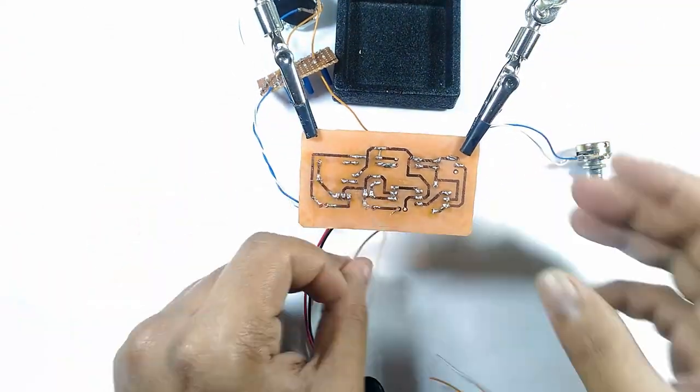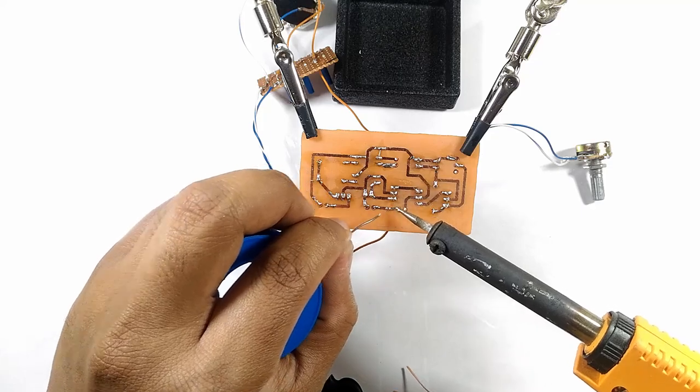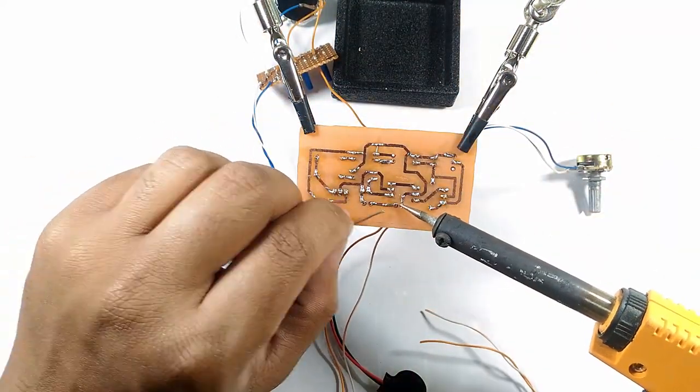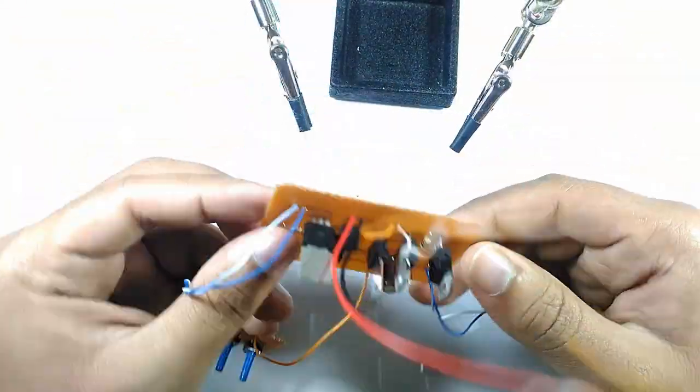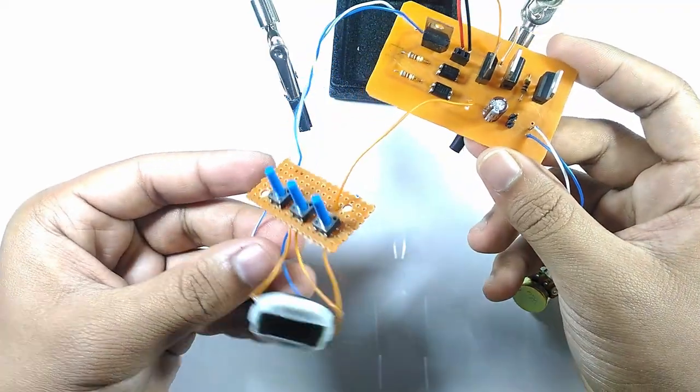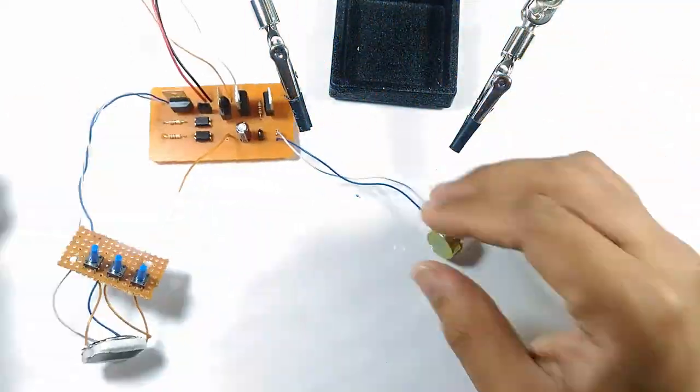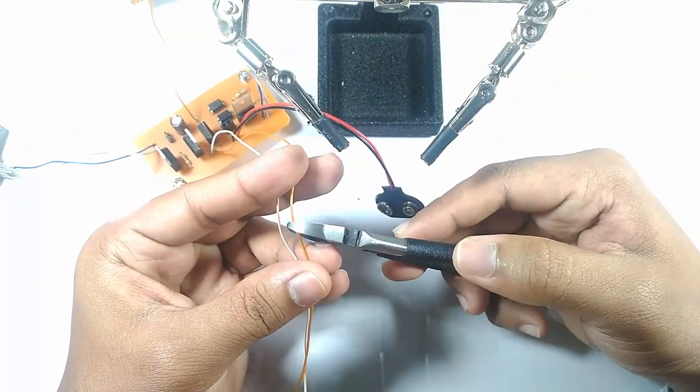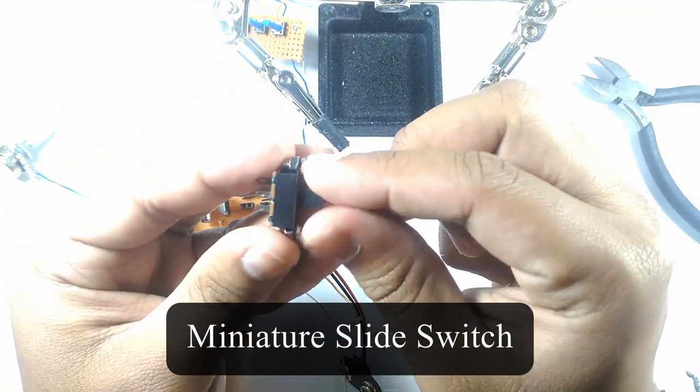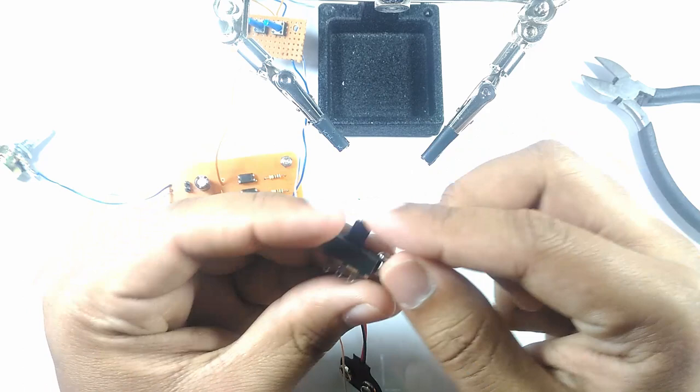Thereafter, I soldered in some wires which would connect to a micro switch. I added a mini slide switch in between the PCB and the micro switch so that the feeder can be turned off when needed.